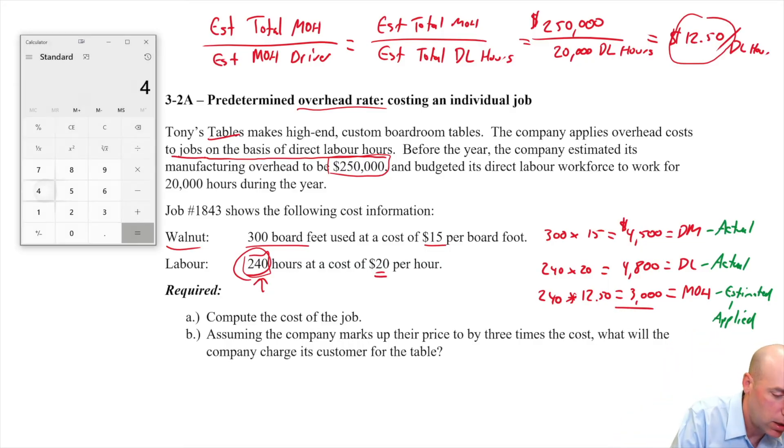So the cost of the job is the material plus the labor plus the overhead. The cost of the job is going to be $4,500 plus $4,800 plus $3,000. The cost of this job is $12,300. Now I kind of jumped the gun here. I answered the question without reading the question.